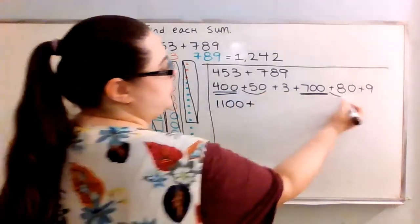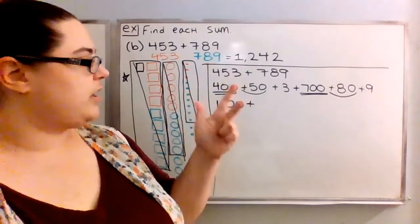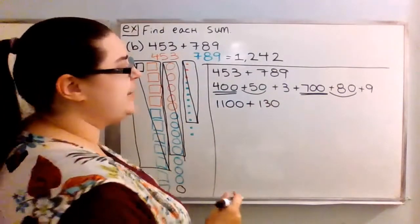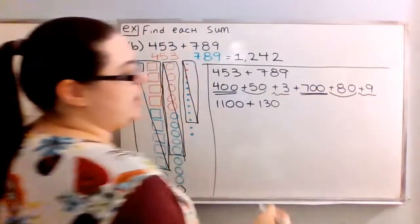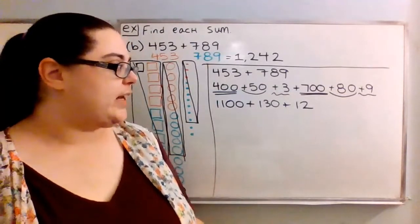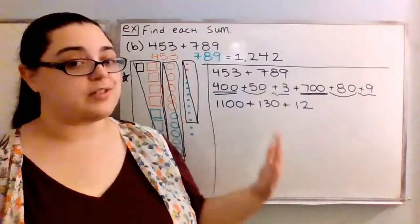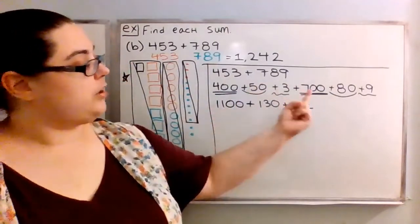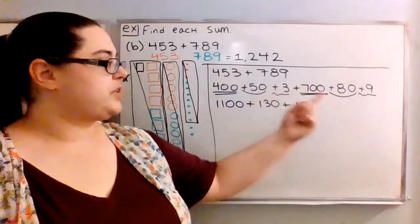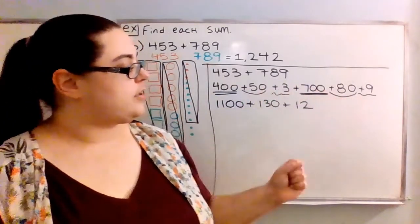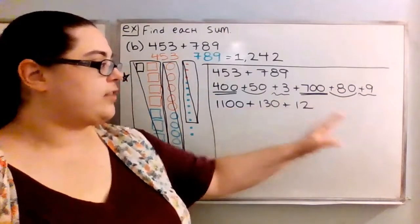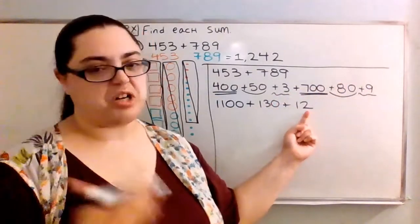Then we have 50 plus 80. I do 5 plus 8, counting to 13, so that gives me 130. And then 3 and 9 gives me 12. Notice when I added the hundreds — 400 and 700 — I did 4 plus 7, which is 11, and because those were hundreds I had the two zeros, so 1,100. Similarly with 50 and 80, I did 5 plus 8 and got 13, and since tens have just one zero, I had one zero after it. The number of zeros stays the same when you add them up like that.